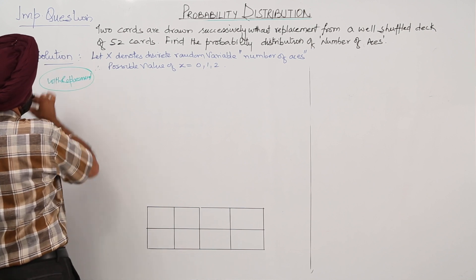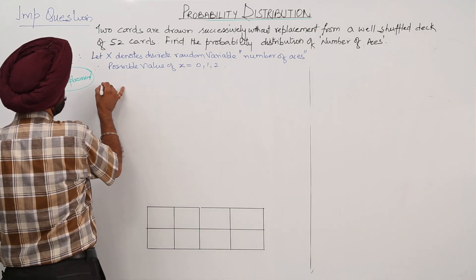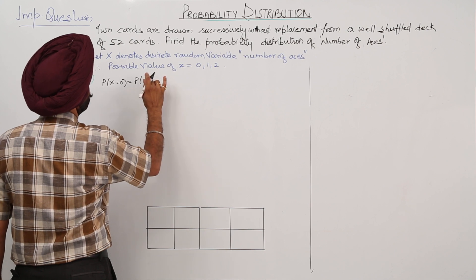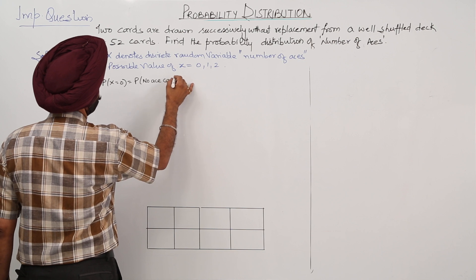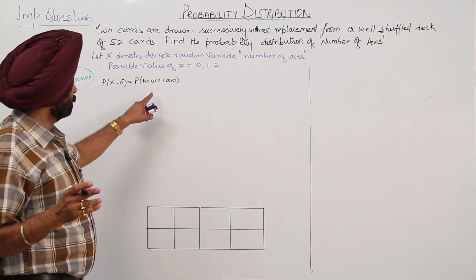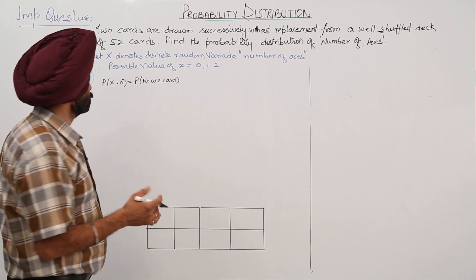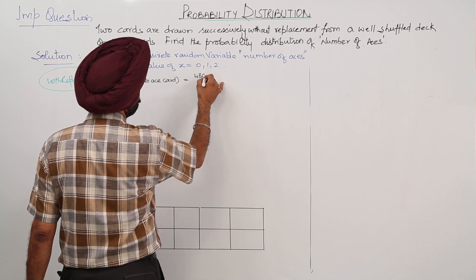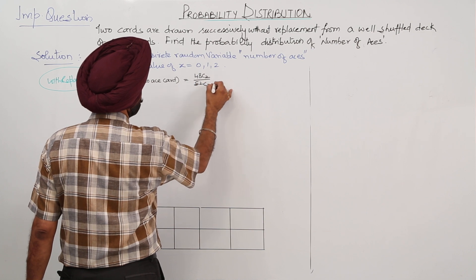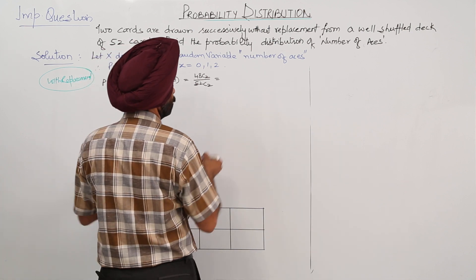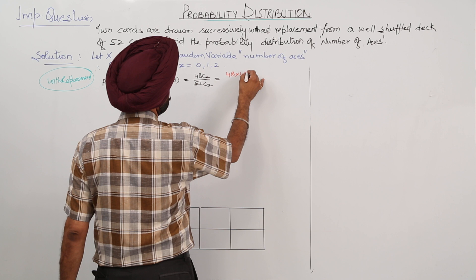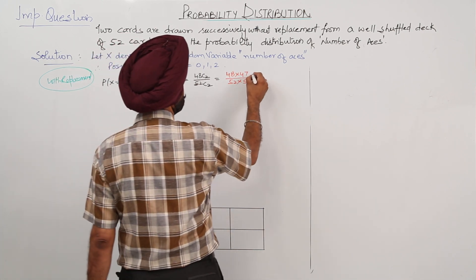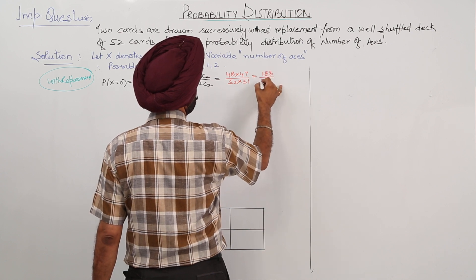First case: X = 0, probability for no ace card. Using combinations: P(X = 0) = 48C2 / 52C2. Solving this gives (48 × 47) / (52 × 51) = 188/221.